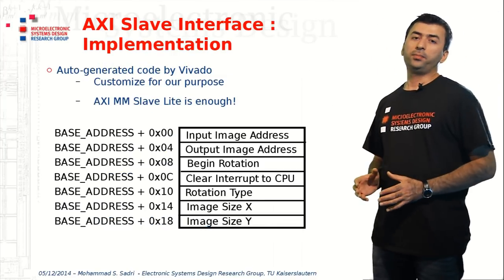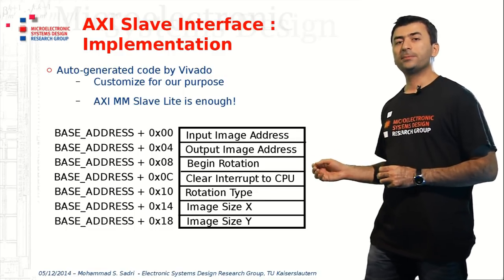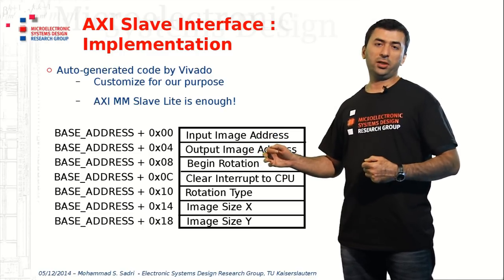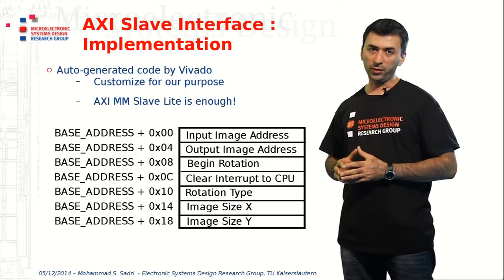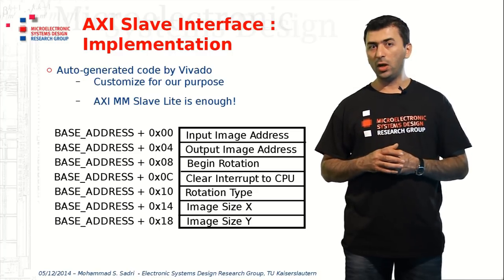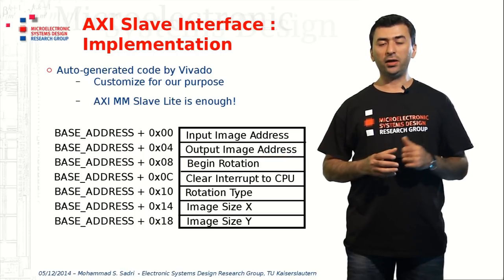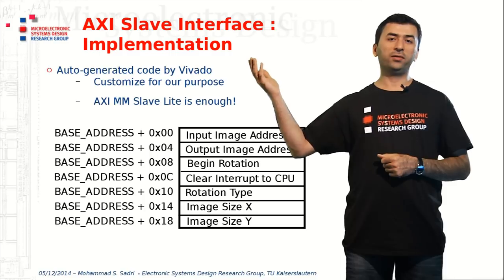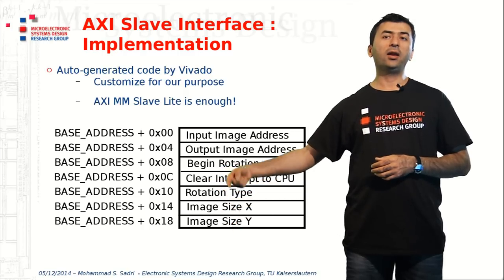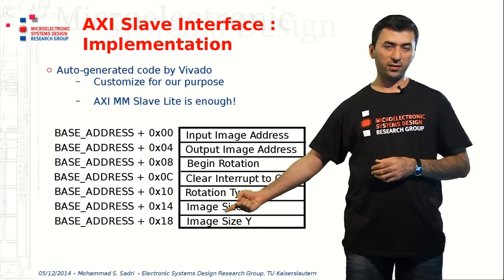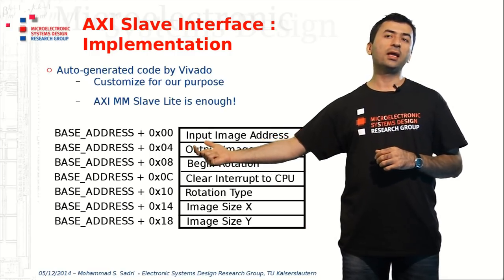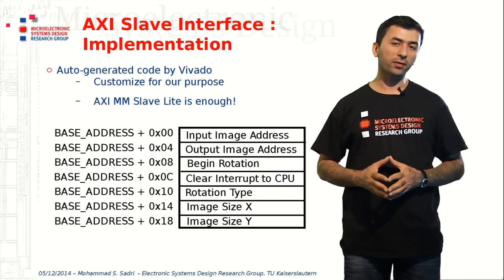Here is how I define the register map required for transferring configuration information from the CPU to the hardware accelerator. I use the AXI slave interface to transfer this data, implementing specific registers each at a specific address. The CPU, by writing to those addresses, will be able to define the different configuration parameters needed by the hardware accelerator.